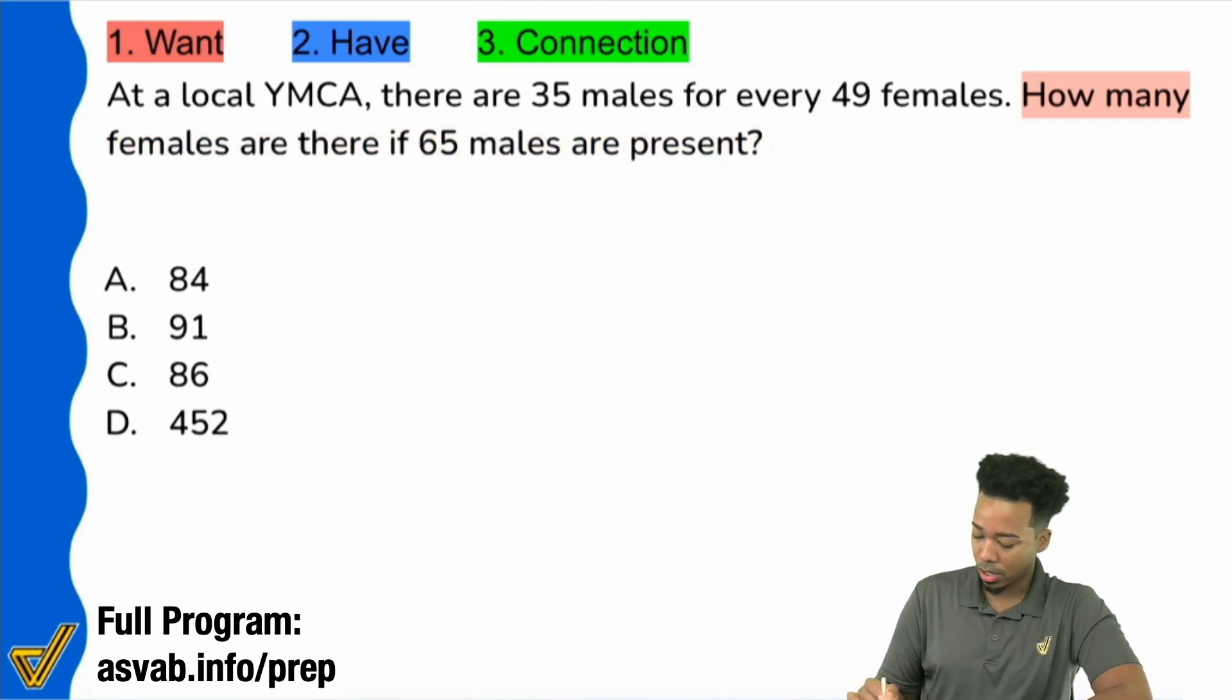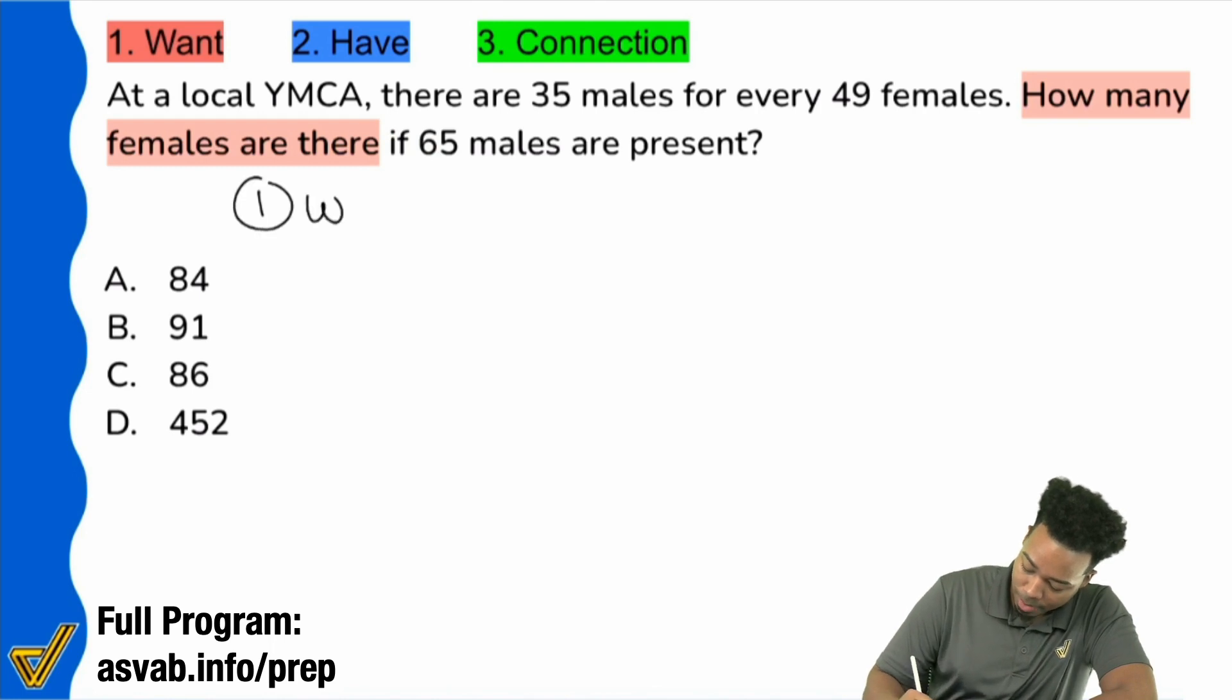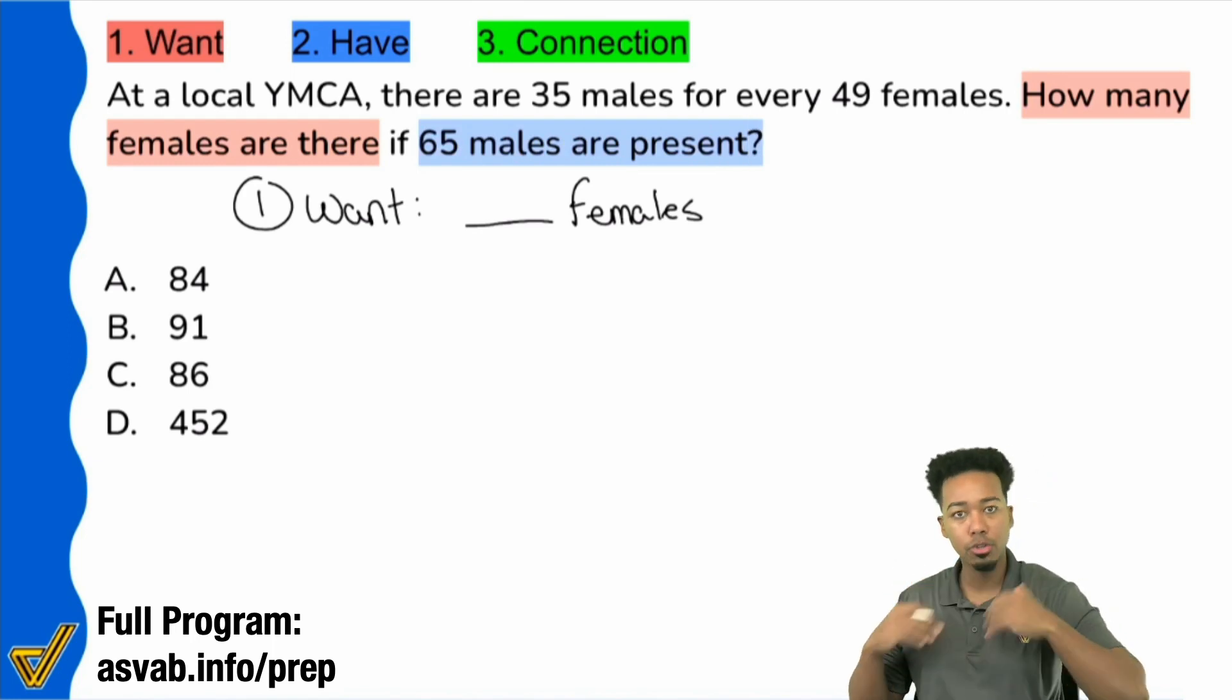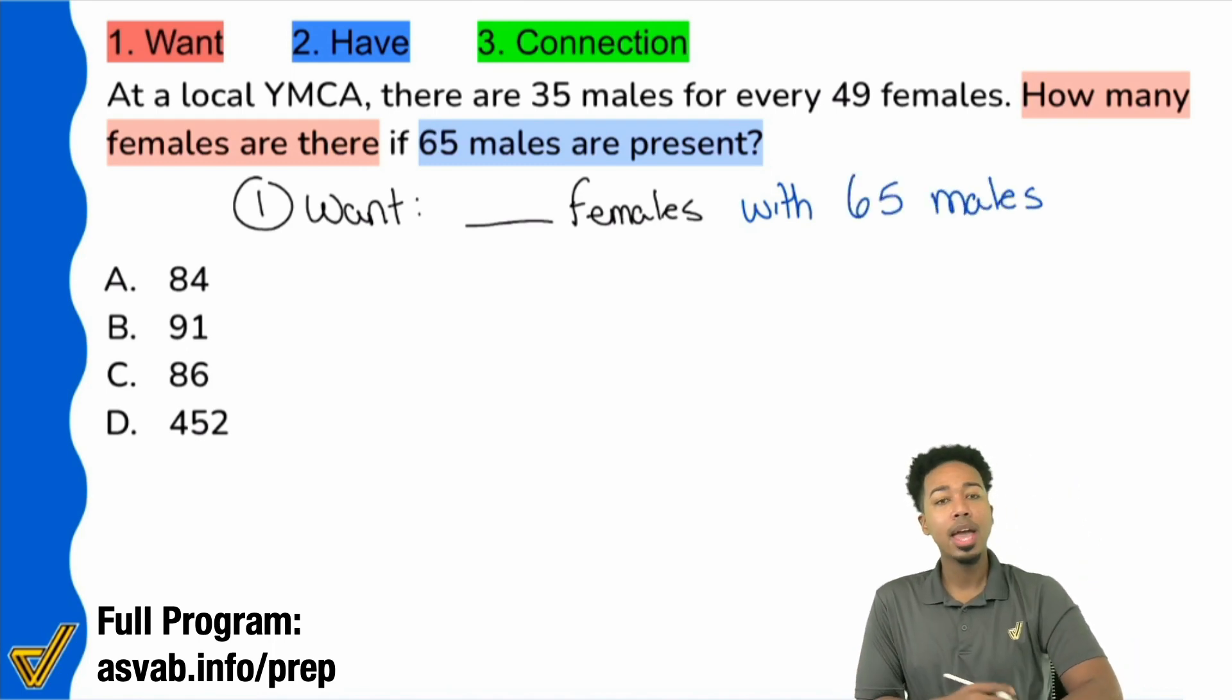So the first thing you want to do is start with the question. The who, what, when, where, how many, which of the following, all of that. So right here is your attention: How many females are there if 65 males are present? So you actually don't even need to highlight the 65 males. It's just how many females are there. That's the question. The if this right here, that's just giving you extra information.